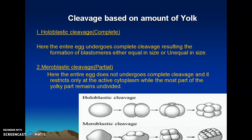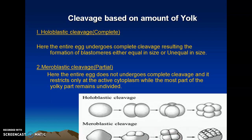In meroblastic cleavage, complete cleavage takes place only in those areas where the cytoplasm responds. The cytoplasm is occupied only in a particular area. It divides into 2, then 4, then 8, etc. The cleavage takes place only at the active part of the cytoplasm, and the rest of the part remains undivided and unaffected. This is called meroblastic cleavage or partial cleavage.